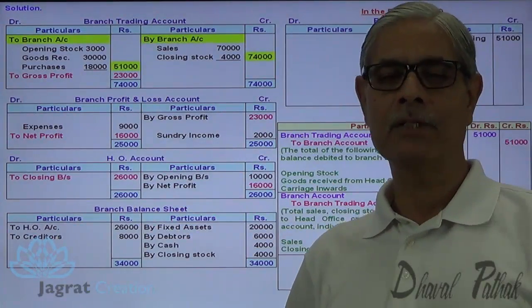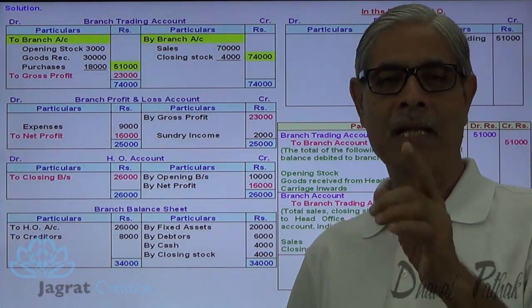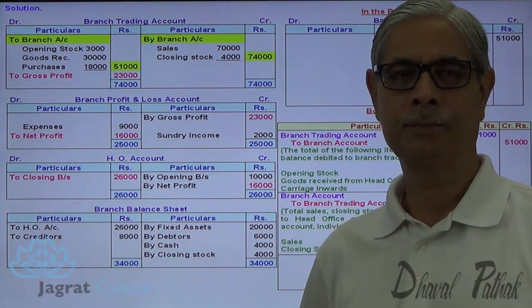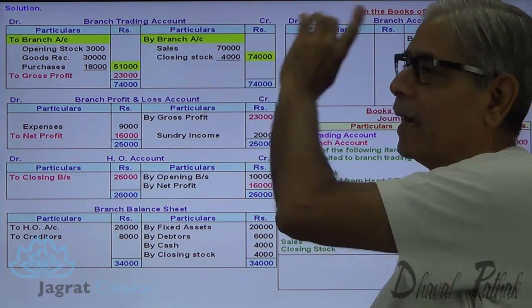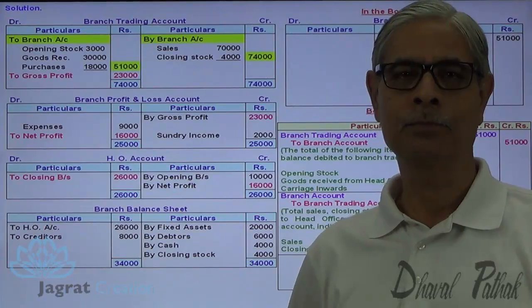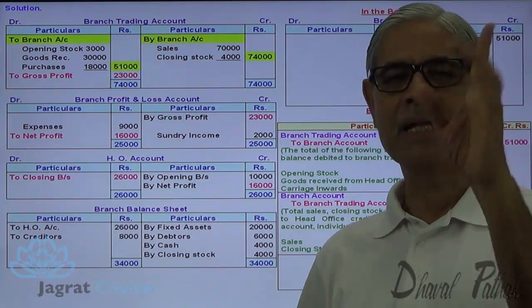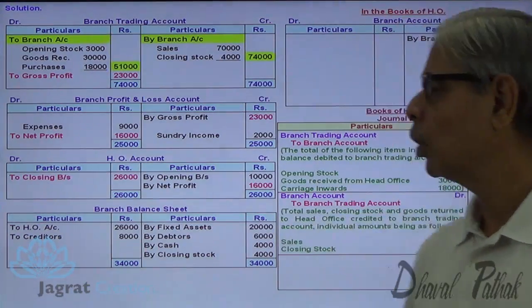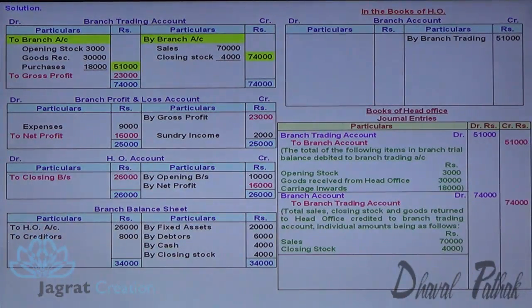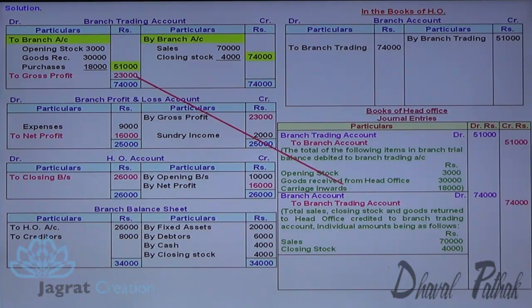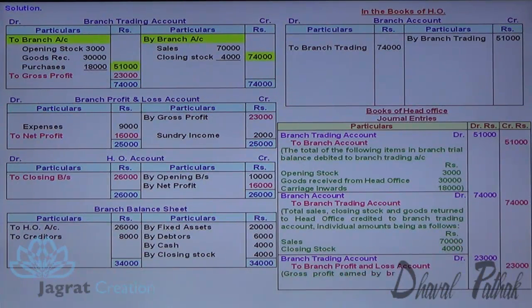Goods are sold by the branch on behalf of the head office. Sales is the head office's income and incomes are credited to trading account. Branch is the receiver of its proceeds, so branch account is to be debited. You can write sales, closing stock, goods returned to head office credited to branch account. Gross profit is transferred to profit and loss account: branch trading account debit to branch profit and loss account credit.